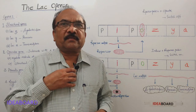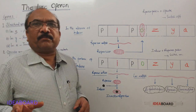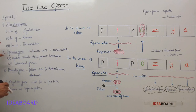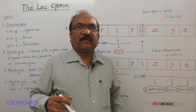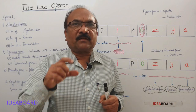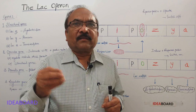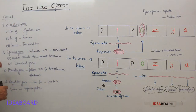Today we will discuss the lac operon, proposed by Jacob and Monod. This lac operon is composed of different types of genes: structural genes, operator gene, promoter gene, and regulator gene. All these are present on one unit of DNA, and that unit of DNA will work in a coordinated manner to synthesize three different types of enzymes.